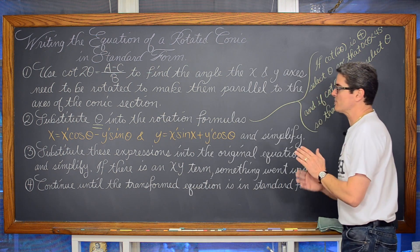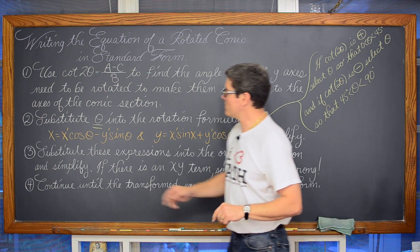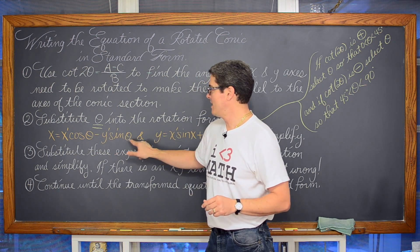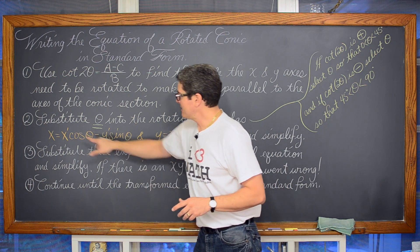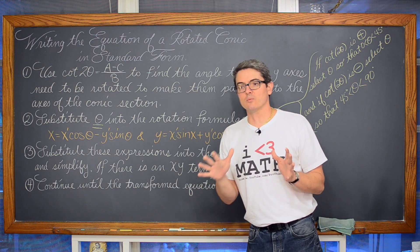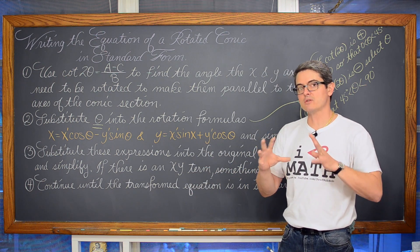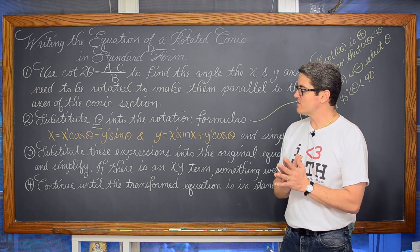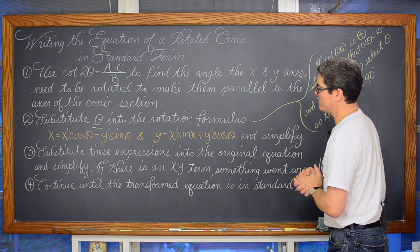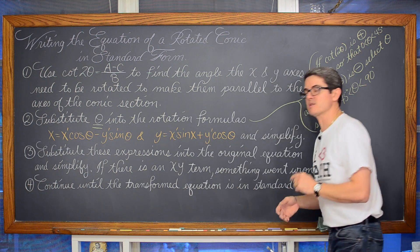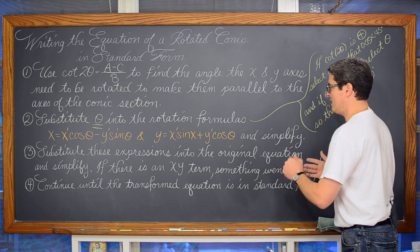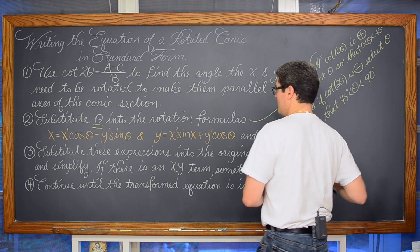Substitute that theta into the rotation formulas: x equals x-prime cosine of theta minus y-prime sine of theta. That x-prime and y-prime notation is saying these are not the original x and y axes — it is a new translated, transformed system to make the graphing process simpler. Then y equals x-prime sine of theta plus y-prime cosine of theta, and simplify.